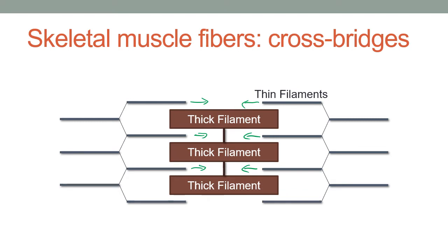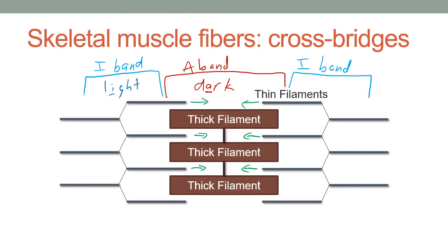The area where the thick filaments are is called the A-band, which is the dark part of the striation pattern. The area where the thin filaments are without any thick filaments are called the I-bands. And if you need help remembering that, you can remember that dark has the letter A in it, and light has the letter I in it. So light for I-band, dark for A-band.